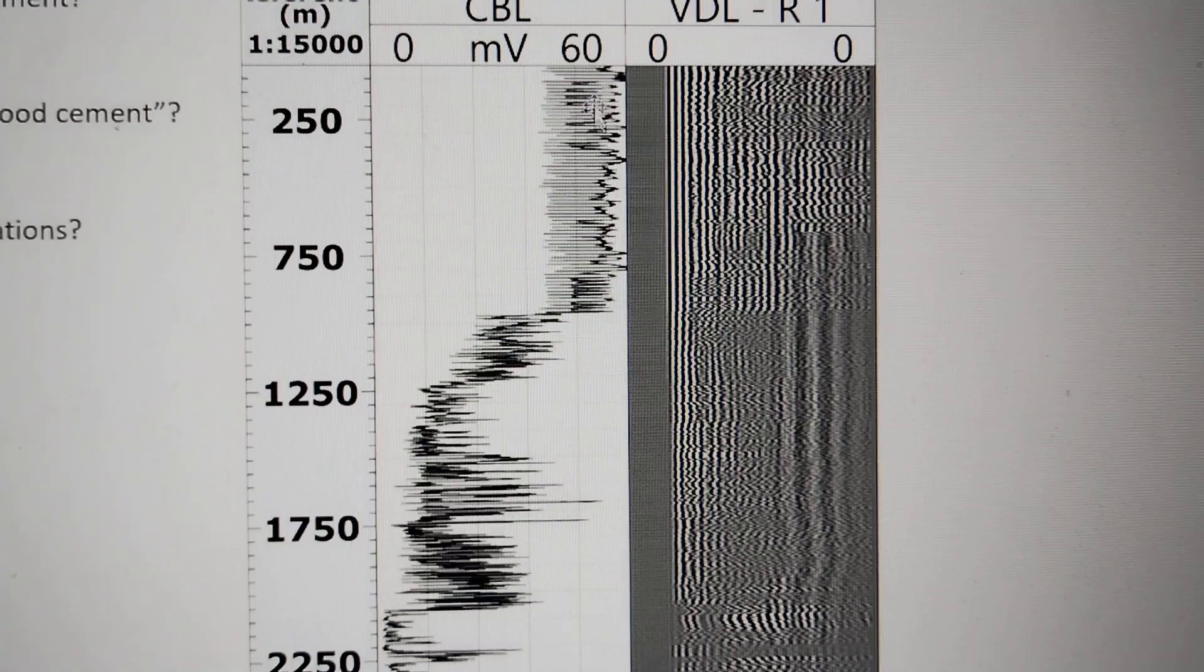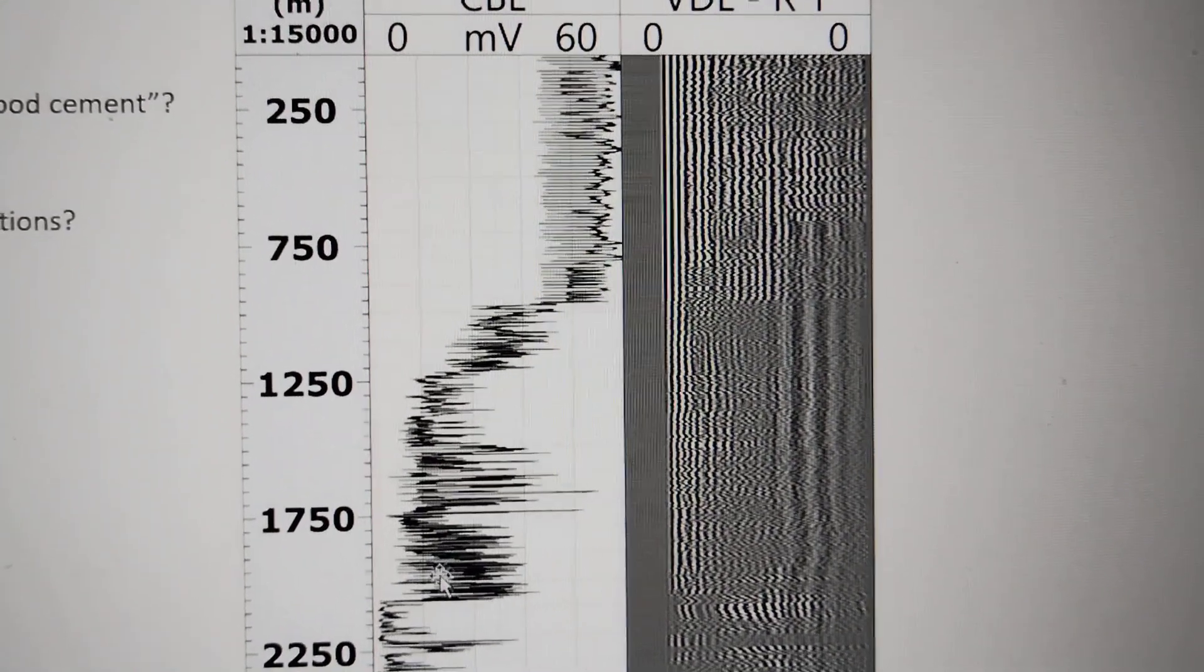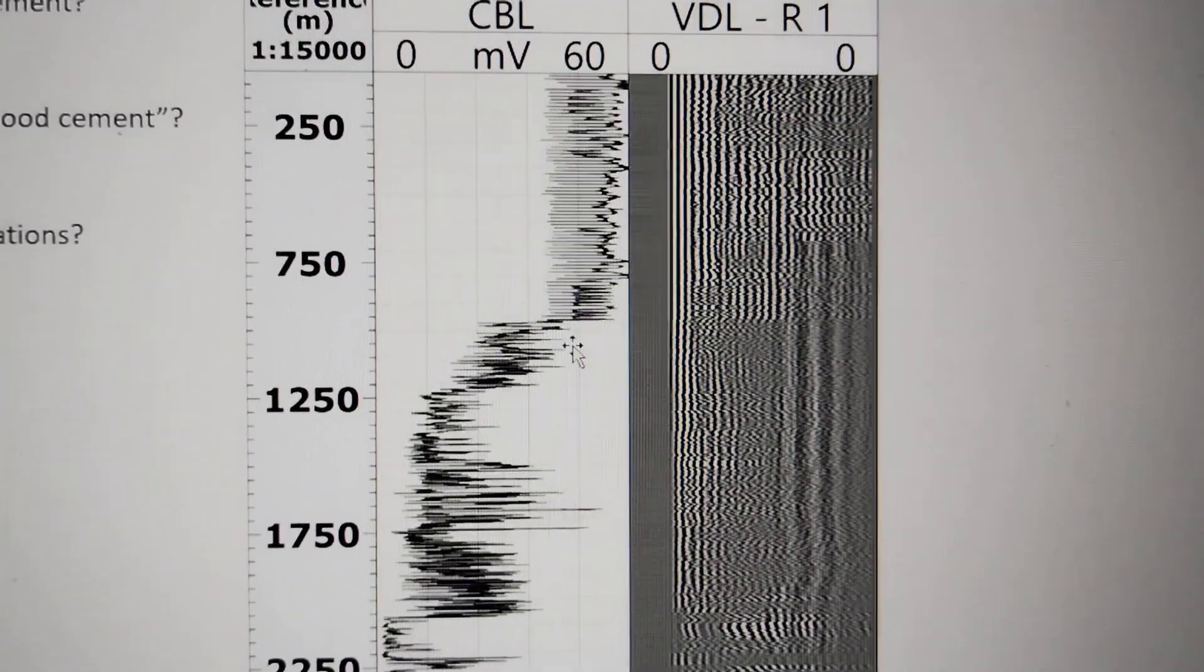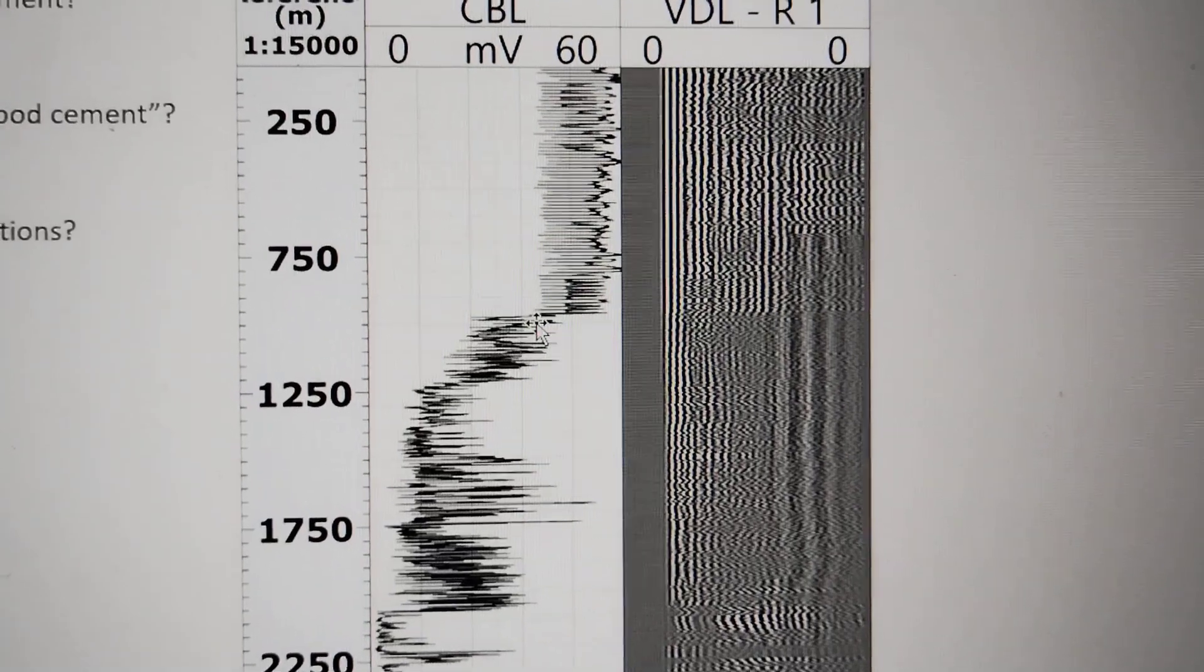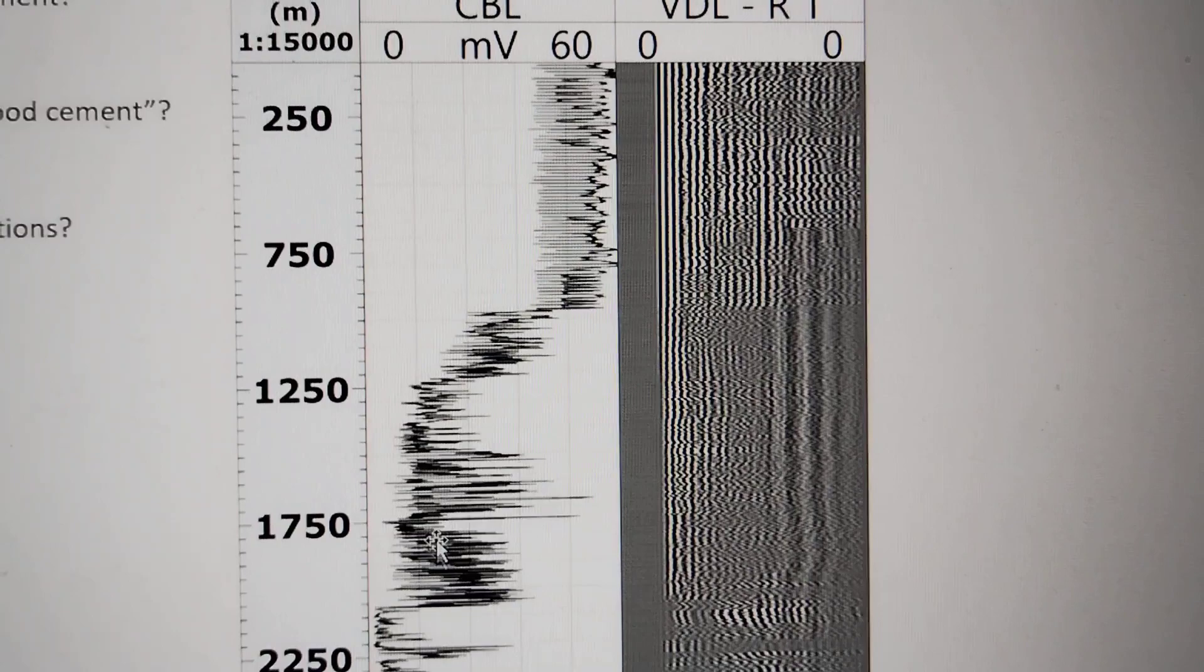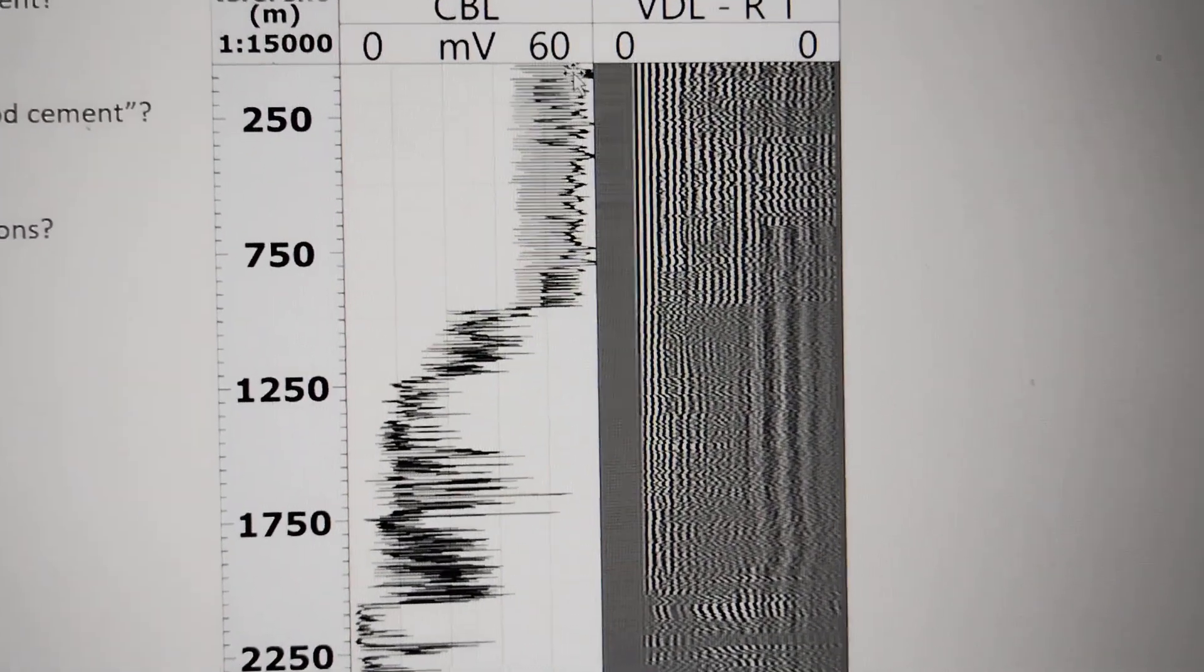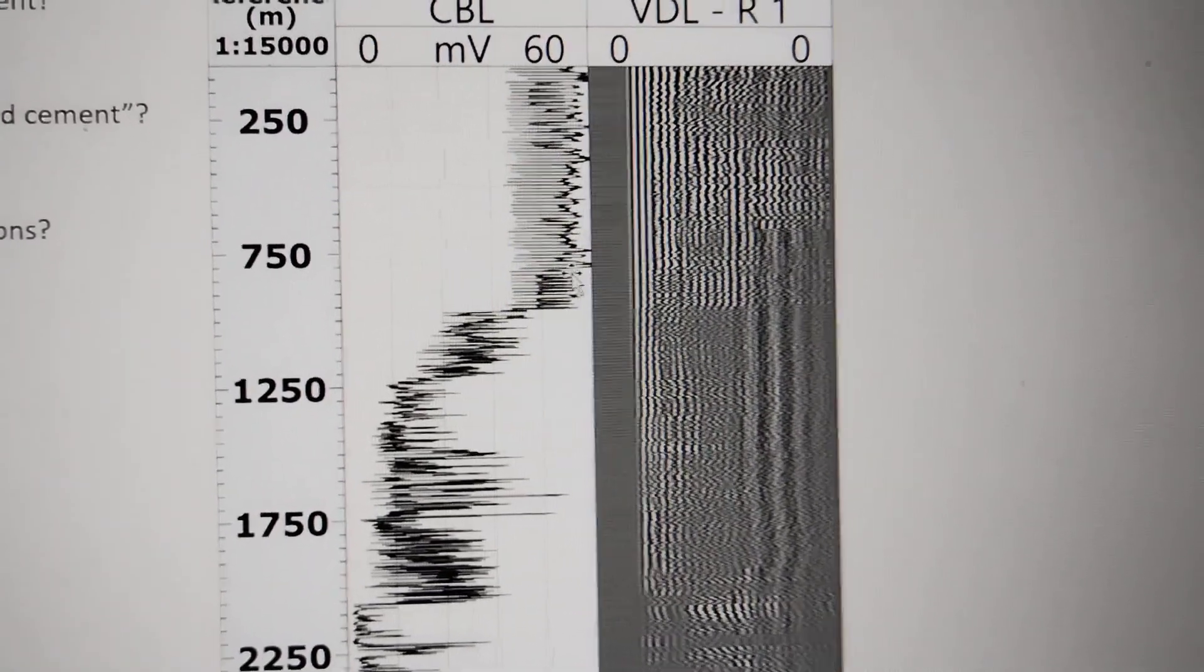You can see this curve here. This curve shows us the amplitude. The rule says where we have low amplitude, there is good cement, and where we have high amplitude, there is poor cement.